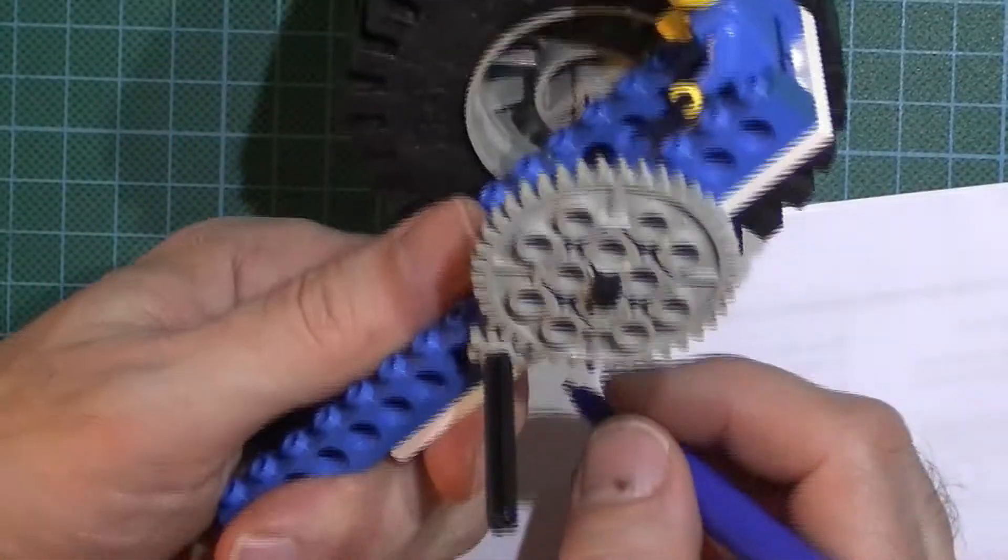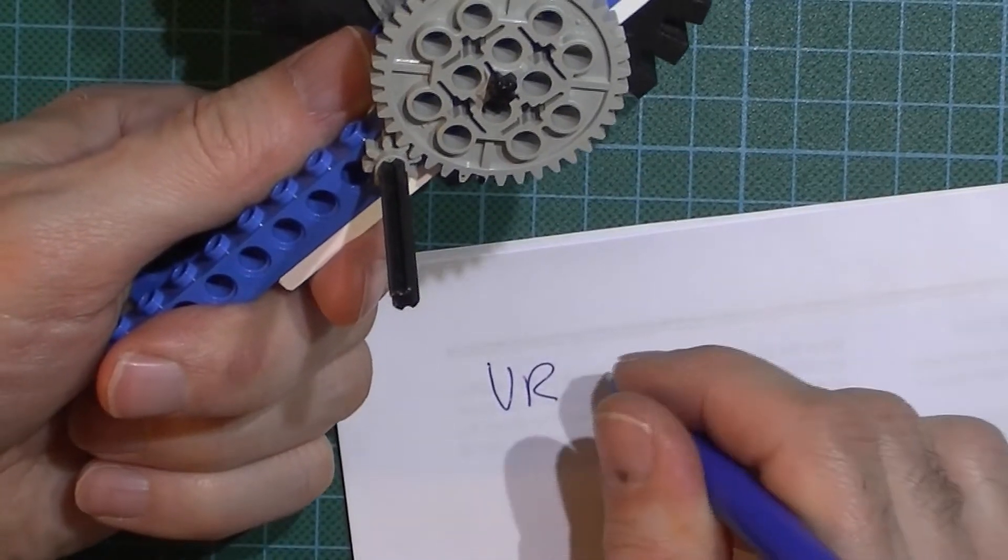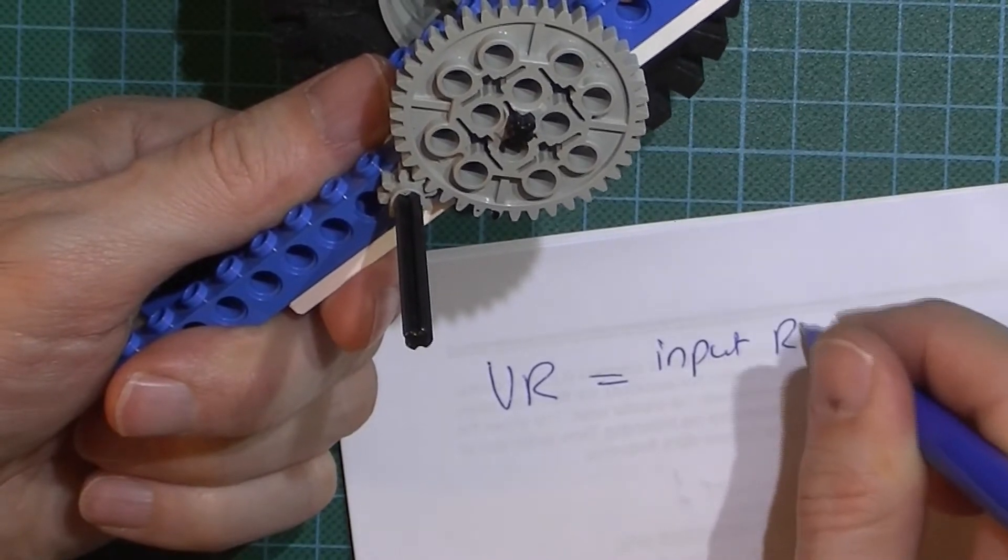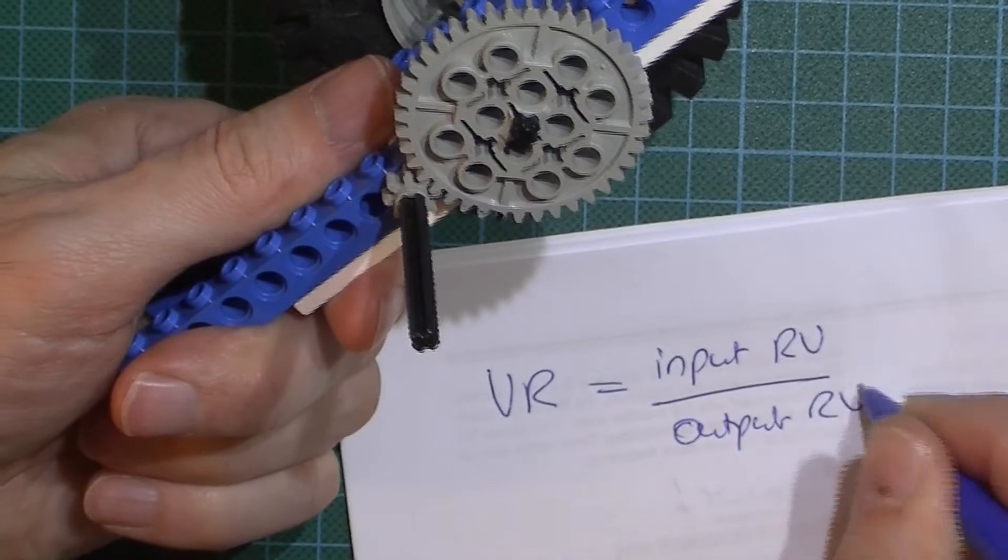I would easily be able to calculate the velocity ratio because the velocity ratio is going to be the input's rotational velocity over the output rotational velocity.